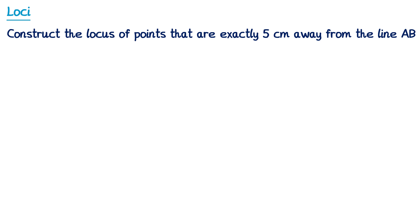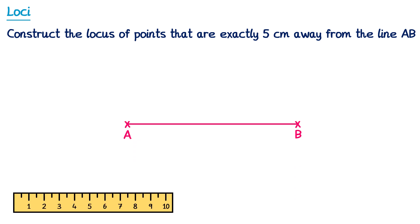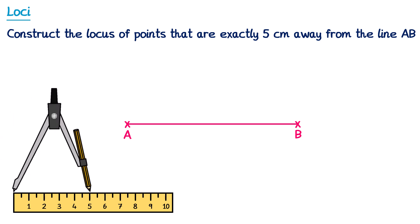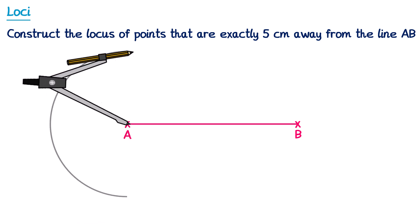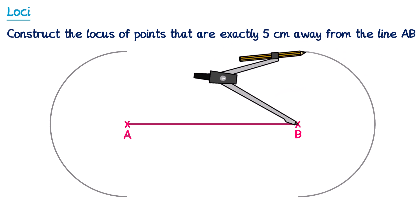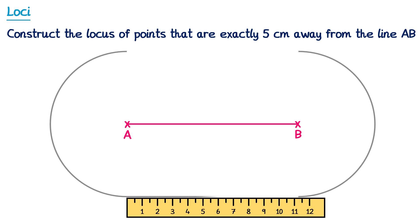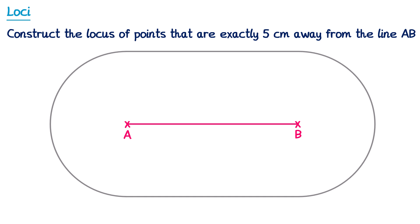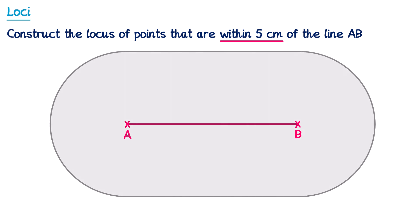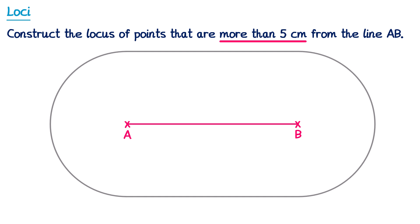For an exam question: construct the locus of points that are exactly 5cm away from the line AB. Take a ruler and a pair of compasses opened to 5cm. Place the compasses on point A and draw an arc, then repeat at point B. Take a ruler and connect the two arcs at the top and bottom to complete the locus. If instead asked for points within 5cm, shade inside the shape. If asked for points more than 5cm away, shade everything outside.